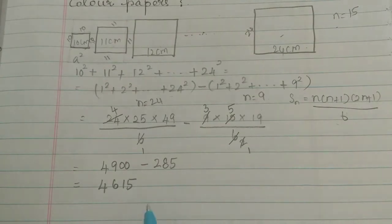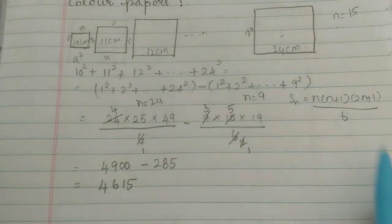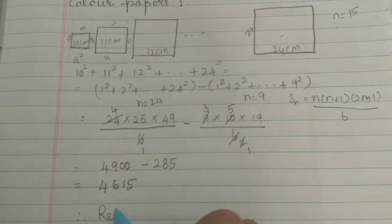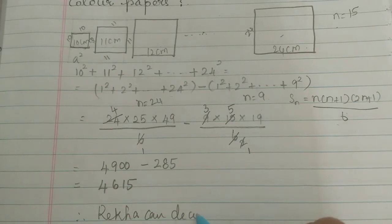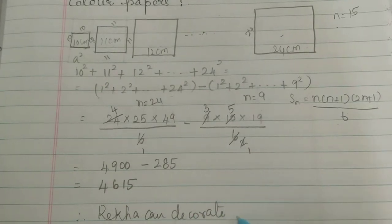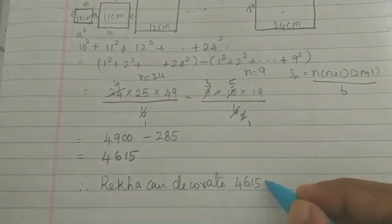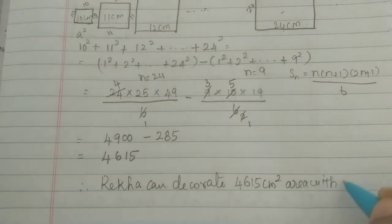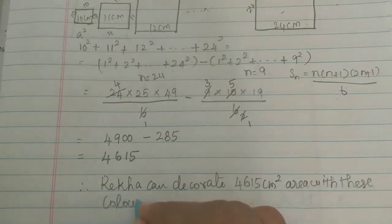So Rekha can decorate 4615 cm square area with the color papers. Therefore, Rekha can decorate 4615 centimeter square area with the color papers.